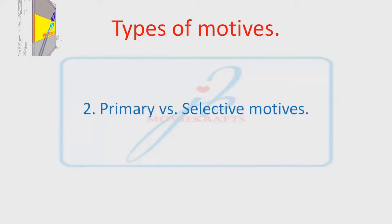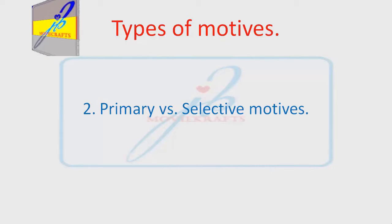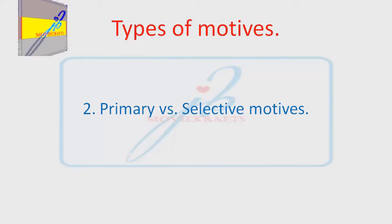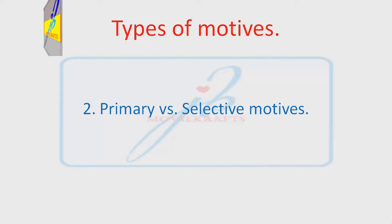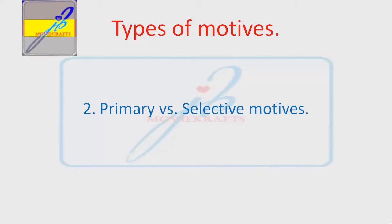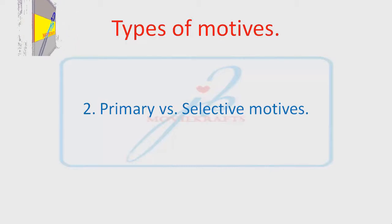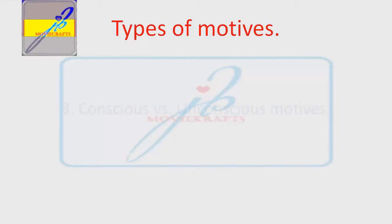Primary vs. Selective Motives: a primary influence involves buying and behavior towards certain generic products, while selective motives are directing towards specific products, models, or stores.